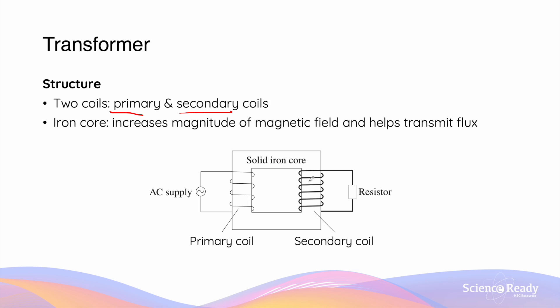The iron core has two main roles. Firstly, it increases the magnitude of the magnetic field produced by the primary coil, and it also helps transmit the magnetic flux between the two sets of coils.